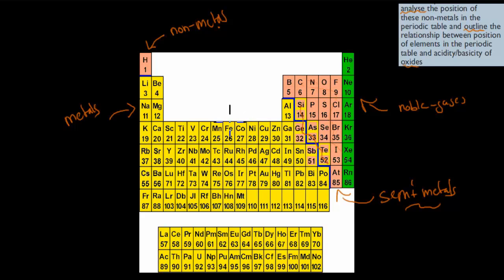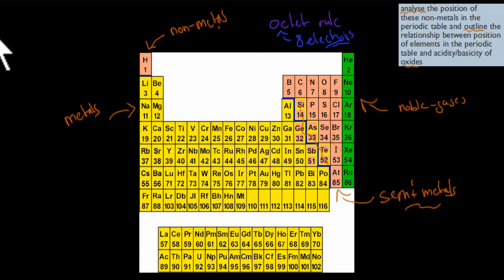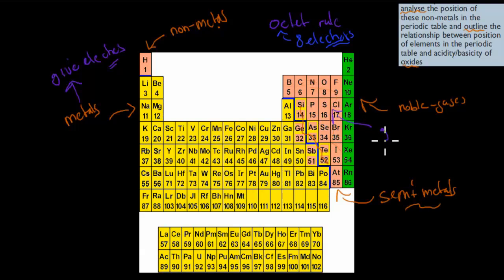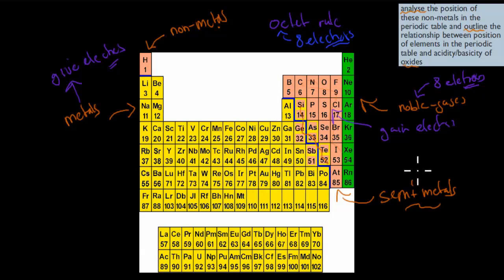We need to go over the periodic table for this dot point. Generally, remember that it has the octet rule — all elements want to have eight electrons in their outer shell. The way they can do that is by giving away or taking electrons. Metals tend to want to give electrons to lose their outer shell and end up with eight. Non-metals tend to want to gain electrons to get eight in the outer shell. Noble gases tend not to react because they already have eight electrons. Semi-metals, because they're in between, can either give or take — they're sometimes confused.